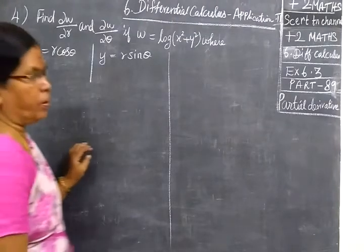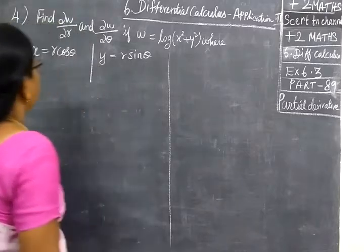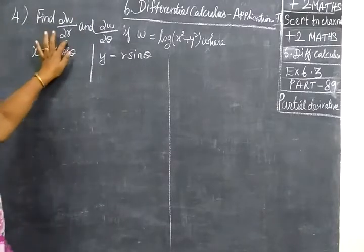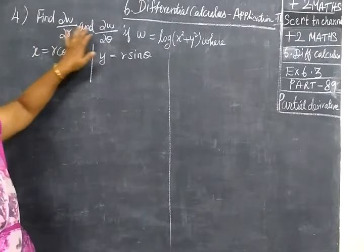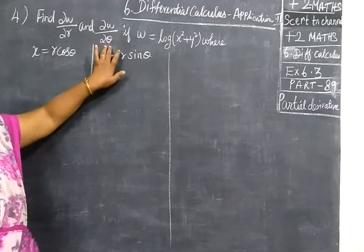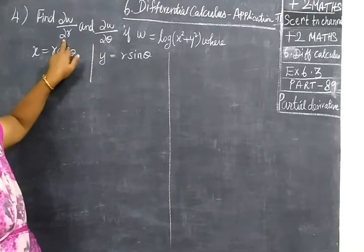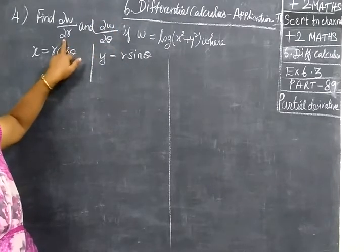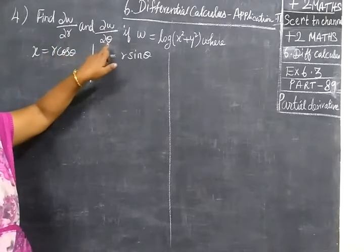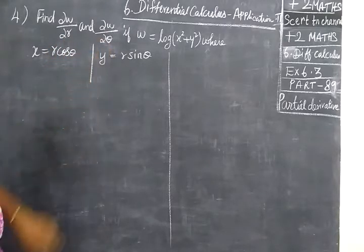Now we see part 89. We need to find ∂w/∂r and ∂w/∂θ. The chain rule with respect to r will be applied with respect to r, and the chain rule with respect to θ will be applied with respect to θ.